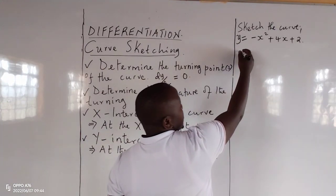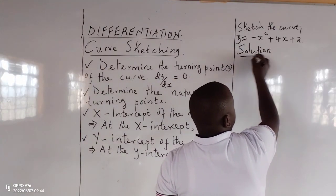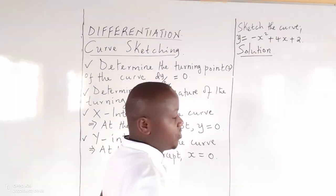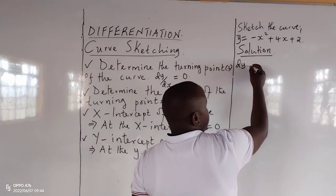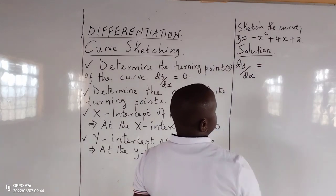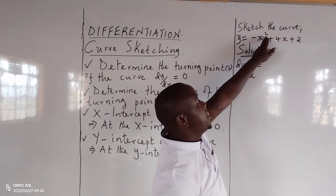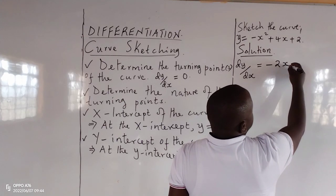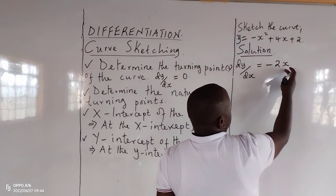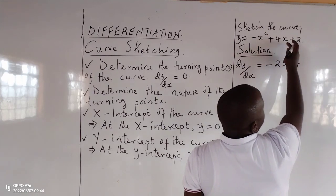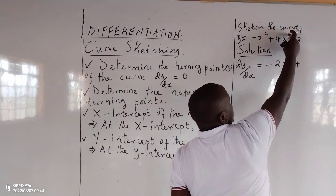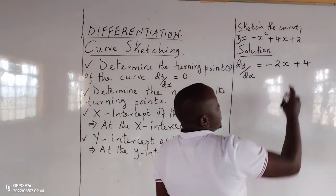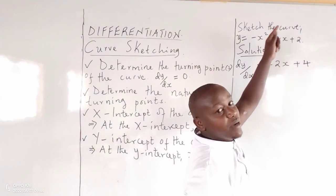The first thing in our solution is to get the derivative of this function — the differential of y with respect to x. To differentiate, we drop the index to the front, so that we obtain negative 2. Then the index is reduced by 1; because it was squared, now it becomes x to the power 1. Then for the next term, we drop the power — the power is only 1, so we drop it and 4 remains a 4. The x was to power 1, so the power reduces to 0, and anything to the power 0 becomes 1.